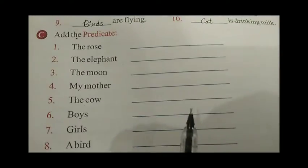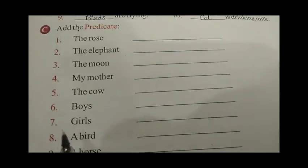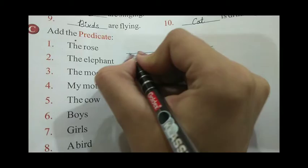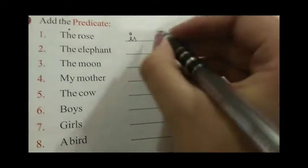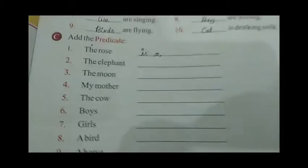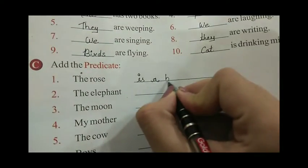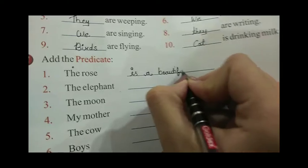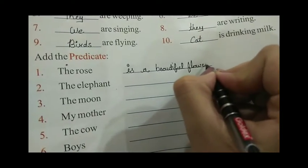Now in exercise C we have to add the predicate. The rose is a beautiful flower — we write 'is a beautiful' — B, E, A, U, T, I, F, U, L — beautiful flower.